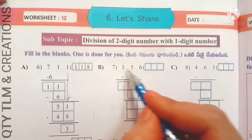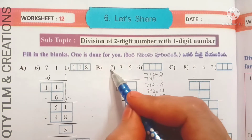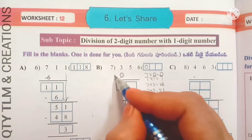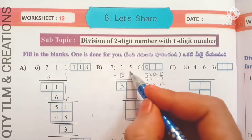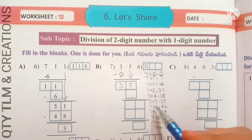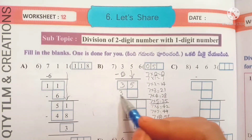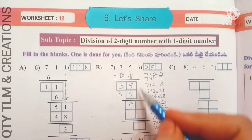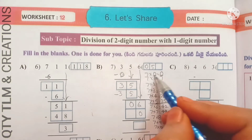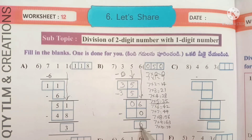Next B: 356 divided by 7. The highest place value is 3, which is less than 7, so write 0 in the quotient's place and 0 under 3, subtract: we get 3. Bring down 5; it becomes 35. 7 fives are 35. Write 5 in the quotient's place and 35 under 35, subtract: we get 0. Bring down 6, but 6 is less than 7, so write 0 in the quotient's place and 0 under 6, subtract: we get 6. Remainder is 6.